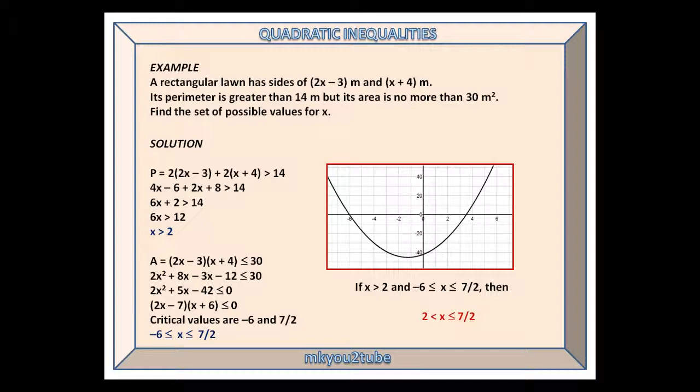The perimeter can be written as p equals 2 lots of 2x minus 3 plus 2 lots of x plus 4, which is greater than 14. This is a linear inequality which simplifies to x is greater than 2.